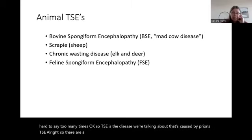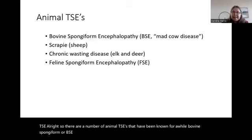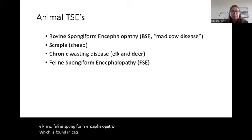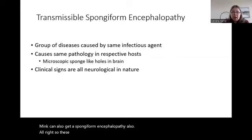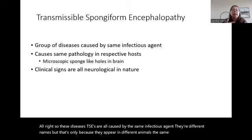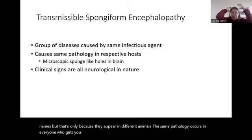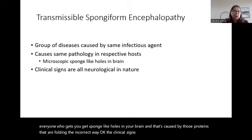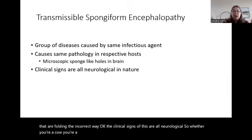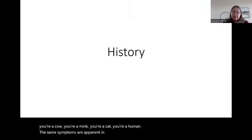There are a number of animal TSEs. Bovine spongiform encephalopathy, or BSE, is in cattle. Scrapie is found in sheep. Chronic wasting disease is found in deer and elk. Feline spongiform encephalopathy is found in domestic and big cats. Mink can also get a spongiform encephalopathy. These are all caused by the same infectious agent — different names only because they appear in different animals — and the same pathology occurs in everyone: sponge-like holes in the brain, caused by proteins folding the incorrect way. The clinical signs are all neurological.